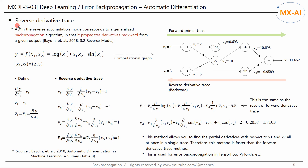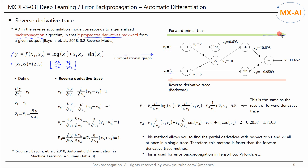Next, let's look at the reverse derivative trace method. This method corresponds to a generalized backpropagation algorithm in that it propagates derivatives backward from a given output. Using the same function y from the previous example, we construct the same computational graph. If we input x1 and x2 and perform the forward primal trace, the final y is output. The partial derivative of y with respect to variable vi is denoted vi-bar; since v1 is x1, v1-bar is x1-bar. Now let's trace this graph from right to left to find the derivatives.